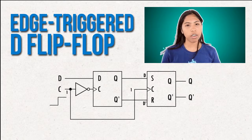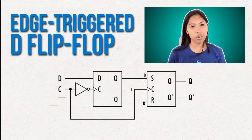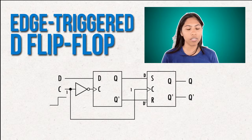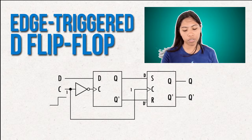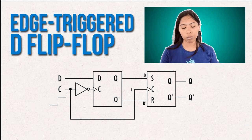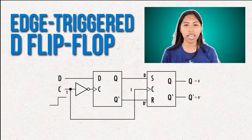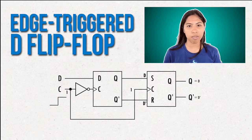The output of Q will now get the input of S and R, so the output of Q will now be D and not D.